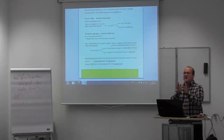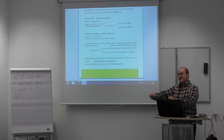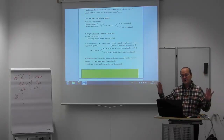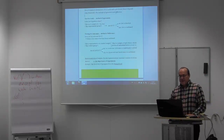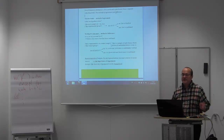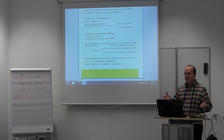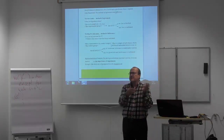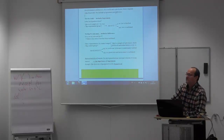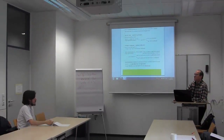A student clarifies: background knowledge can help find a hypothesis, but the method allows testing the hypothesis independently of it. Without background knowledge you might test many hypotheses before finding the right one, but with background knowledge you're more likely to find the right hypothesis immediately and then test it. An allergy example: to find the cause of your allergy, vary factors one at a time — first try varying your diet, then pollen exposure, then your living environment — rather than changing everything at once, which wouldn't tell you which factor was responsible.